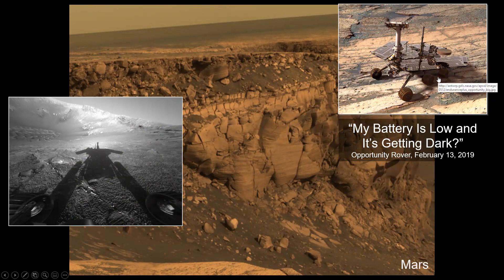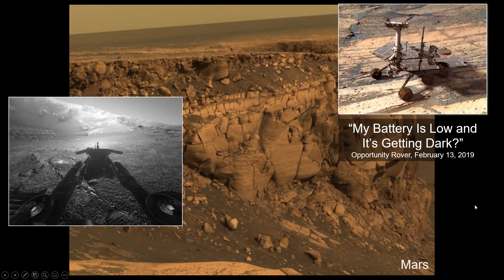And it's kind of funny, and also a little bit sad to note that one of the last signals that came from this robot rover on the surface of Mars was basically equivalent to 'my battery is low and it's getting dark.' So it finally ran out of battery and was not able to charge with the solar panels that you see there.